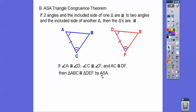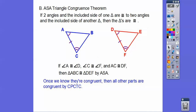Angle-side-angle: you go this angle, then this side, then this angle. Once we know they're congruent, all the other parts are congruent by CPCTC, which we talked about in the last lesson.